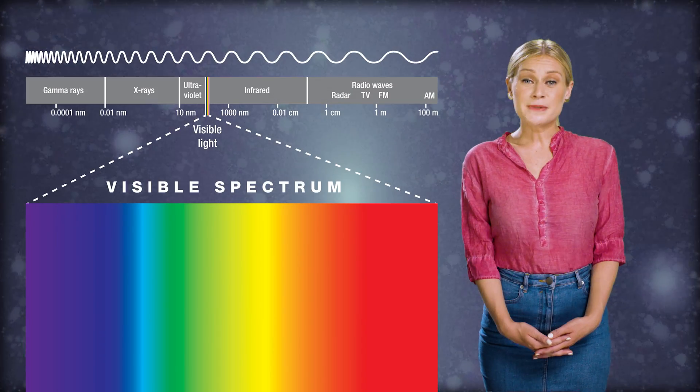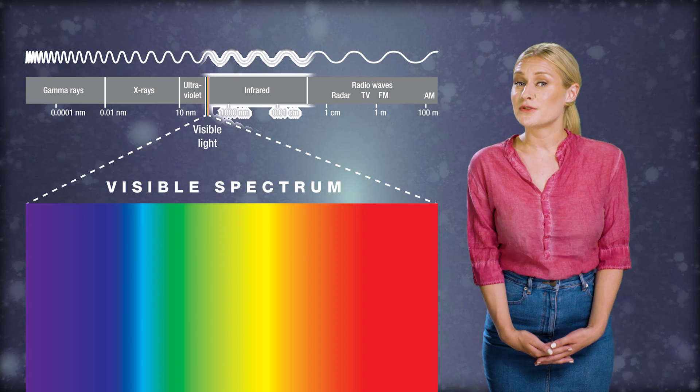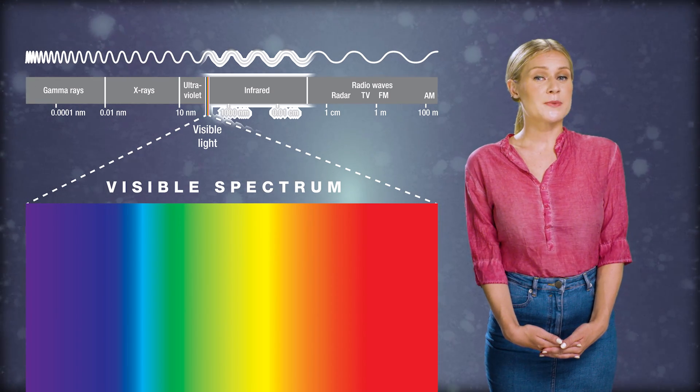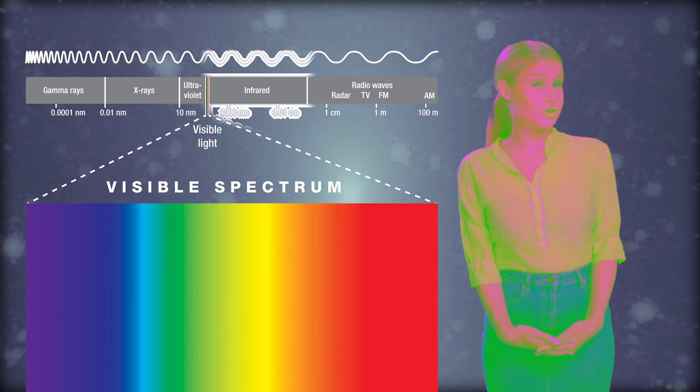For example, humans emit light in the infrared due to our body temperature, which is not visible to the human eye, which is why if you wear infrared goggles, you can see us in the dark.